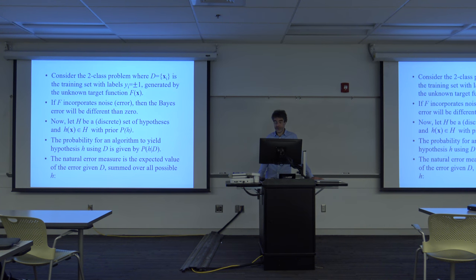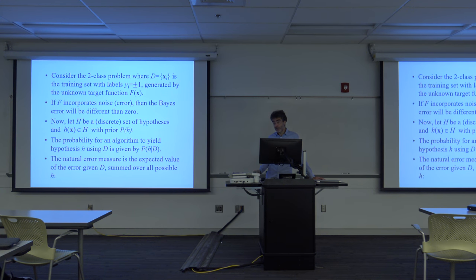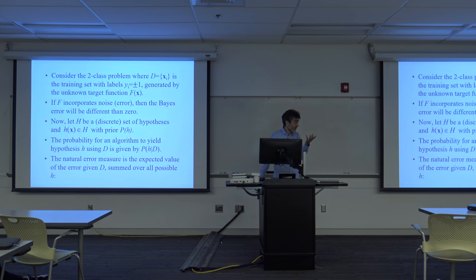For simplicity, let's consider the two-class problem, where D is our data. We have samples x_1 through x_n as our training data, and our labels for classification are plus and minus 1 for the positive and negative class. These data samples and their output labels — these x, y pairs — are generated by some underlying but unknown function f, which is the one we want to find or estimate. If f incorporates noise, which it usually does because our measurements are not perfect — whether from a camera, microphone, microarray for DNA, or some other sensor — then the Bayes error will be different from zero.